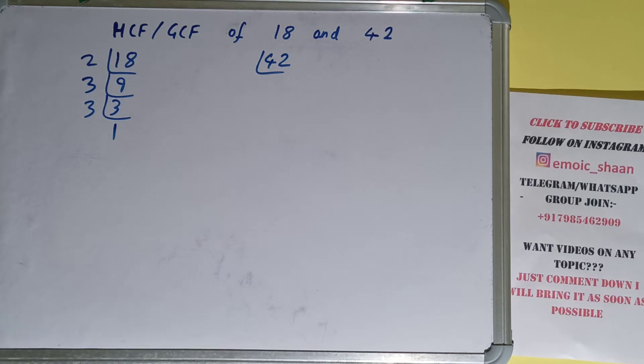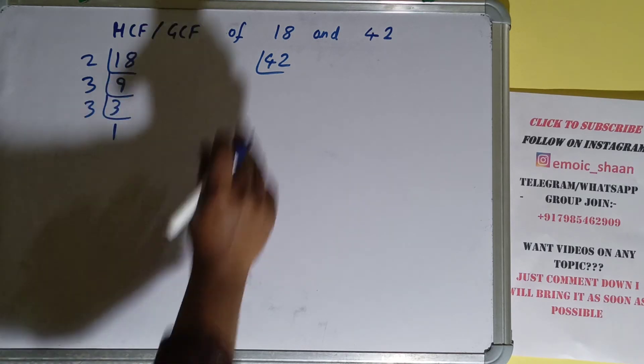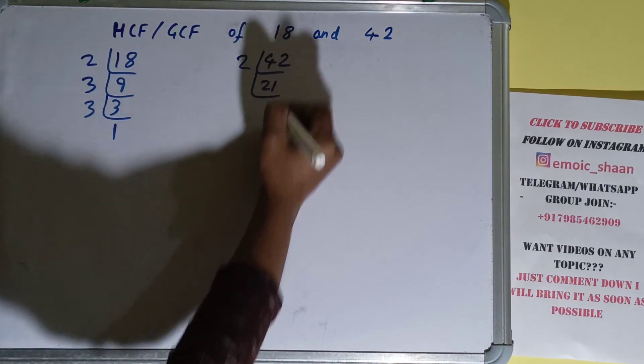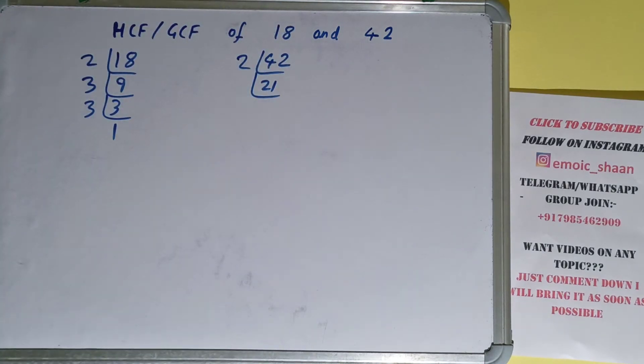Now we need to do the same with the number 42. Is 42 divisible by 2? Yes it is, and we'll have 21. Is 21 divisible by 2? No. So we'll check with the next lowest prime number, which is 3.